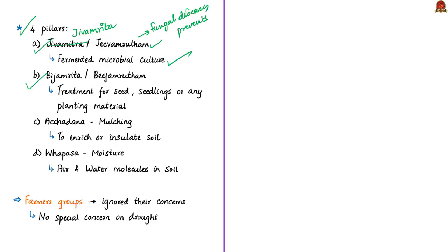Bijamrita is effective in protecting young roots from fungus as well as from soil-borne or seed-borne diseases that commonly affect plants after the monsoon period. It is composed of similar ingredients to Jivamrita such as local cow dung — a powerful natural fungicide — cow urine, a strong antibacterial liquid, lime, and soil. The third pillar is Achadana mulching — where materials such as decaying leaves, barks, or compost are spread around or over a plant to enrich or insulate the soil.